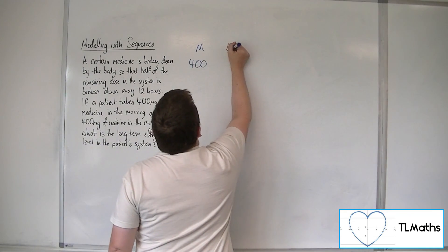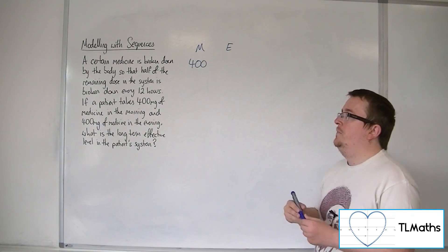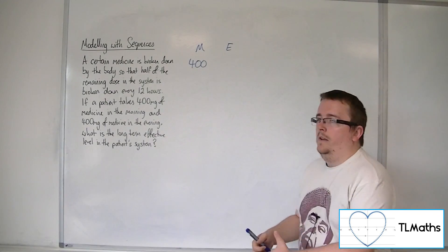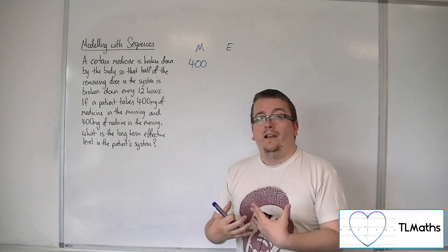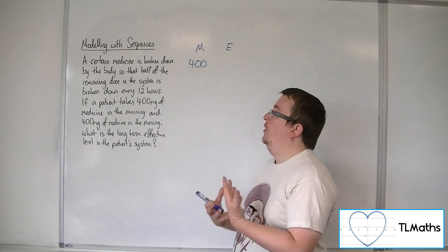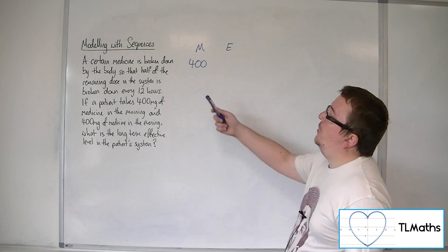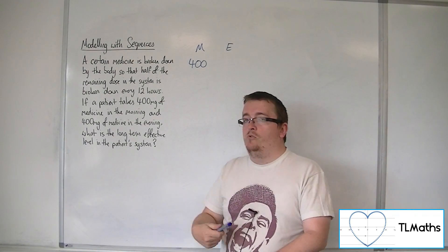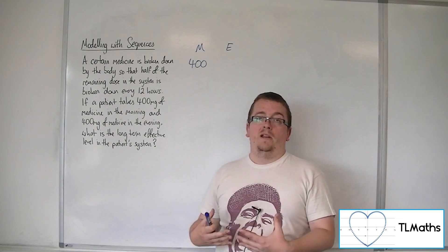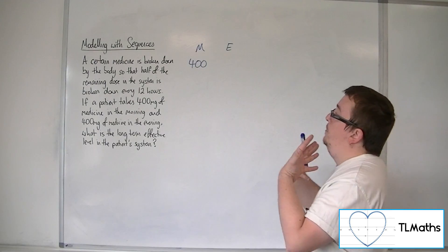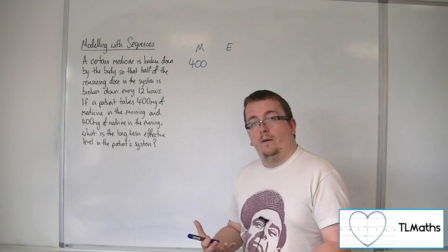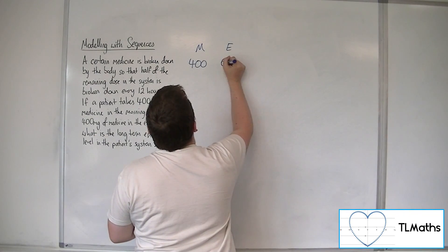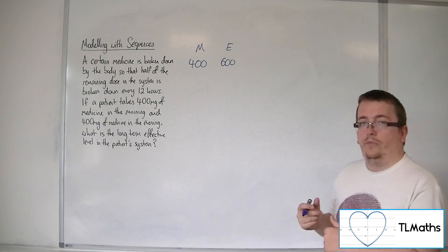Okay, by the evening, so if we're saying that every morning and evening is 12 hours apart, in the evening, the amount of medicine that is still in the patient's system is now only 200mg because half of the remaining dose in the system is broken down every 12 hours. So, half of it's broken down. So, the patient's only got 200mg left in the system by the evening. Okay, but then they take another dose of 400mg. So, they've now got 600mg in their system.